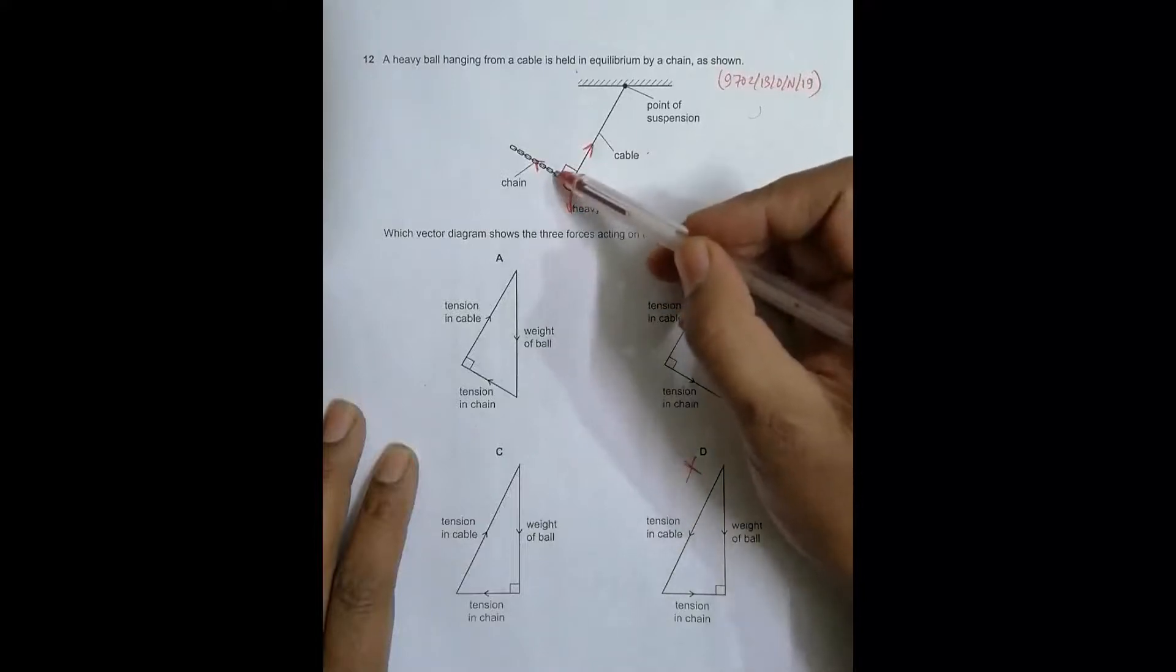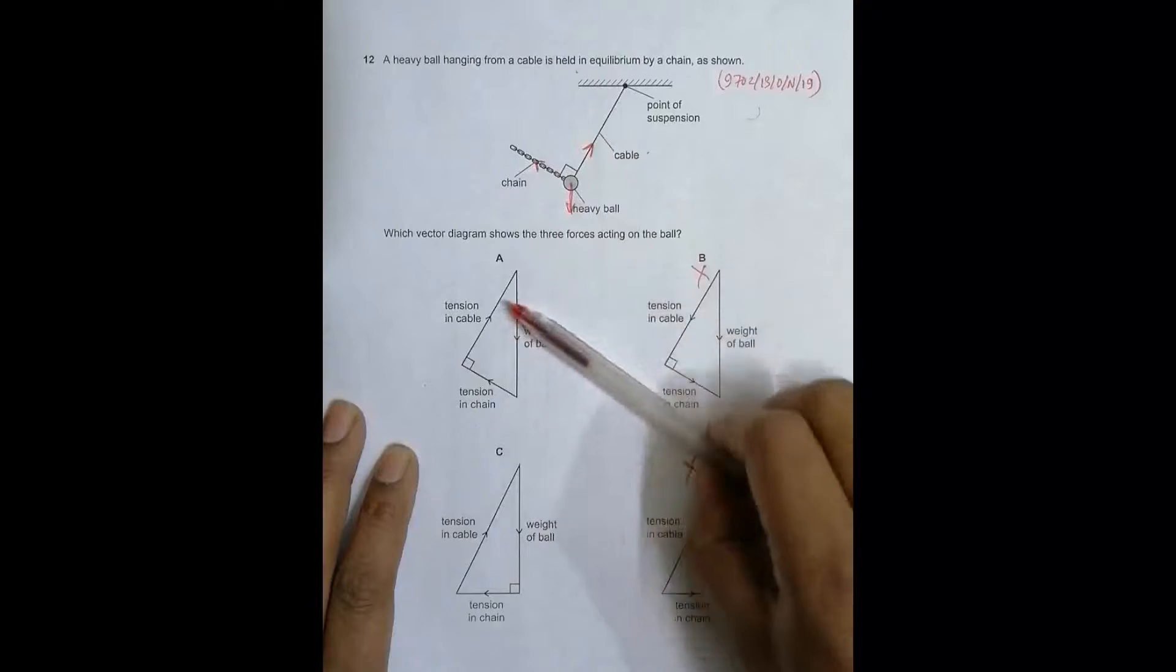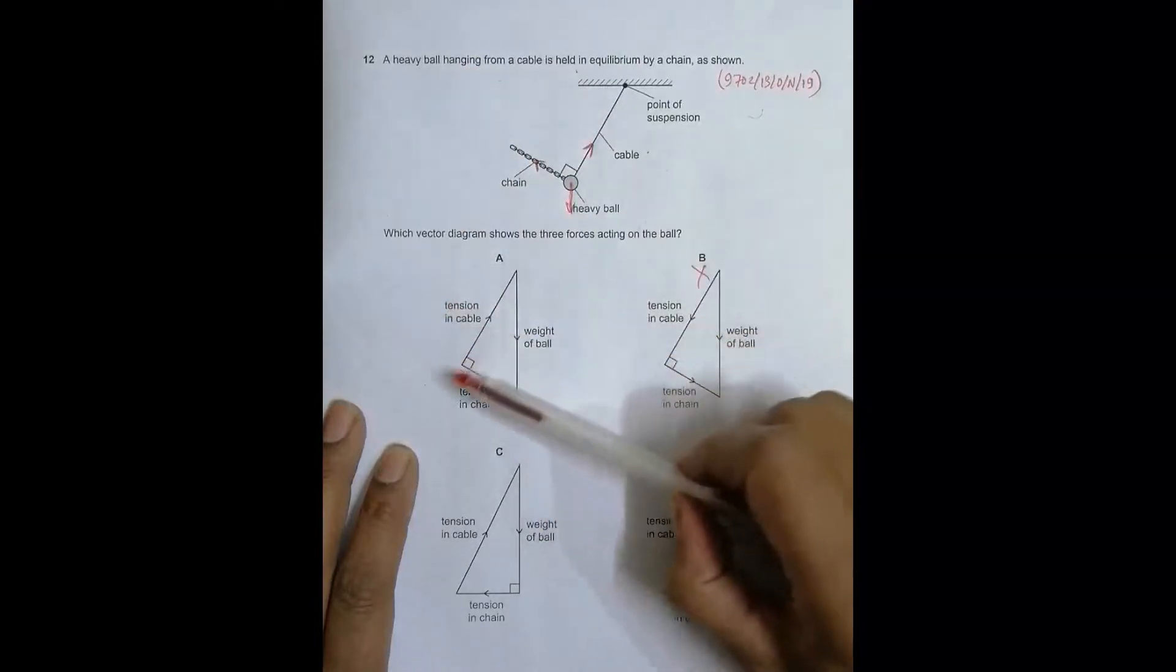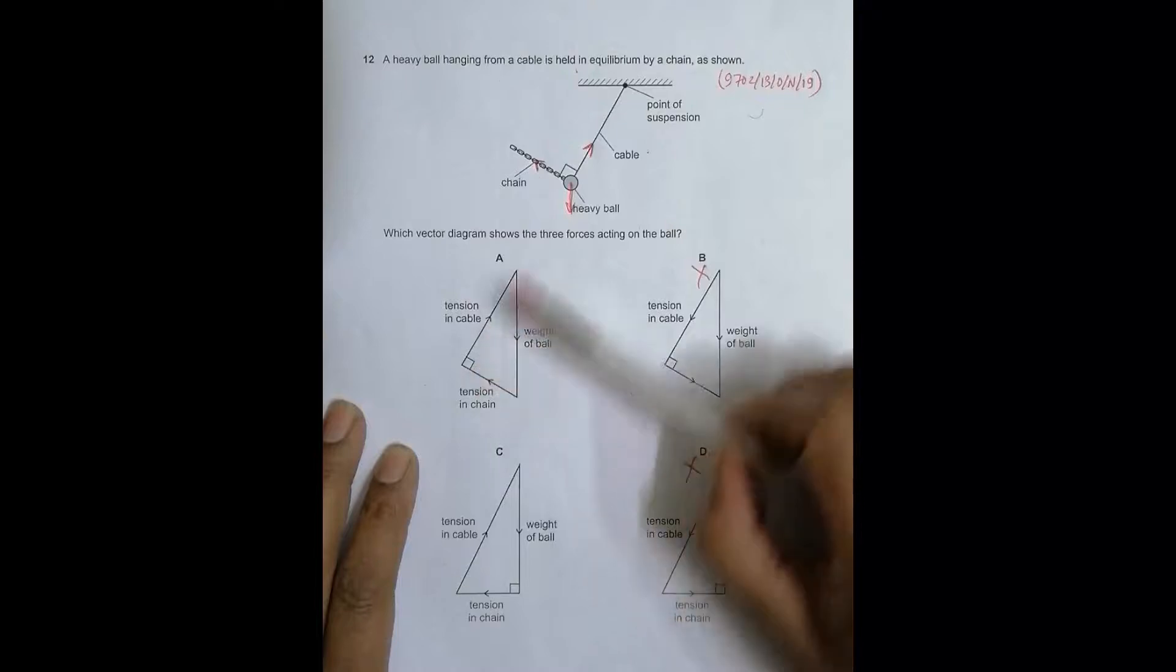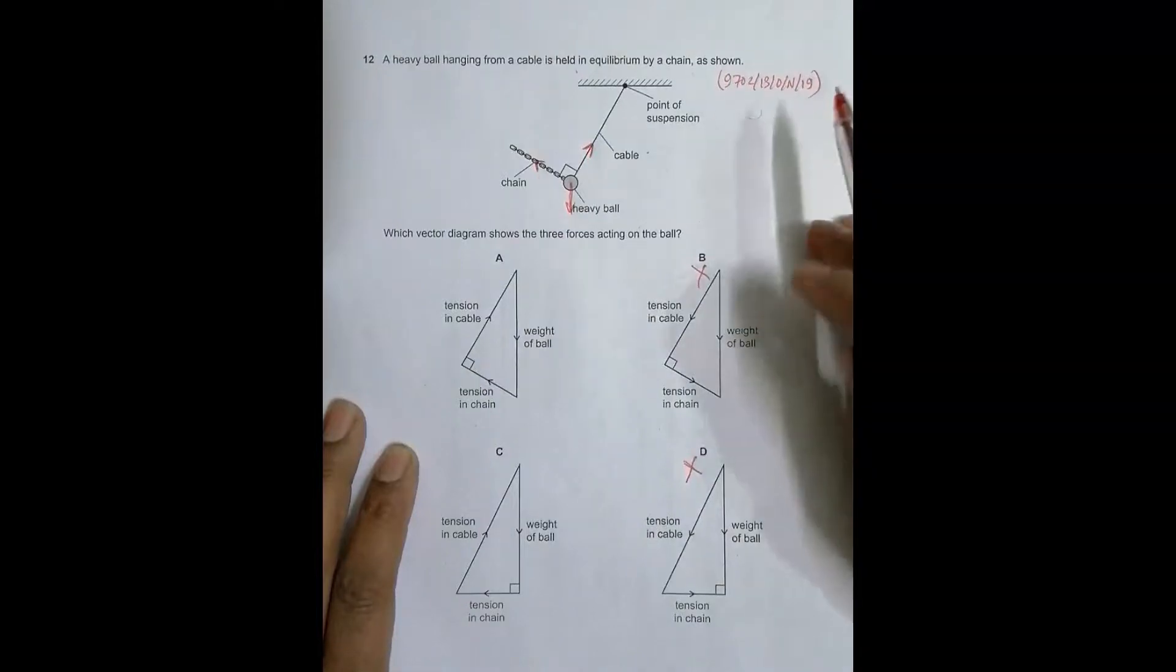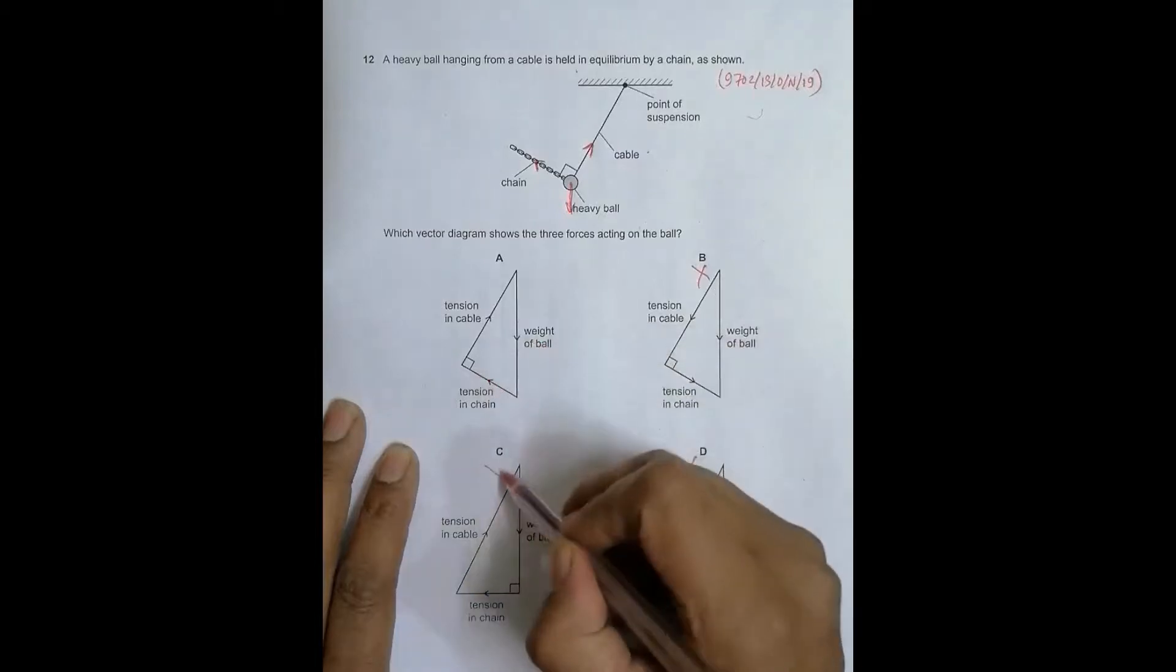Looking at the weight, there's some angle here and it's perpendicular to the tension in the cable. If I go to this diagram, this direction resembles this and it's also perpendicular. The tension in the chain is perpendicular to the tension in the cable. Though the angle has been shown in different locations, it is perpendicular, so this diagram qualifies and this does not.